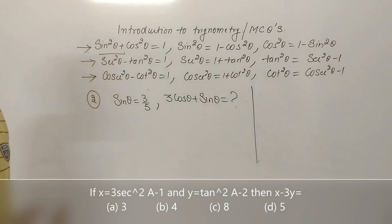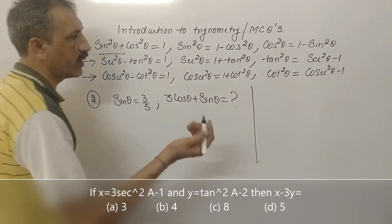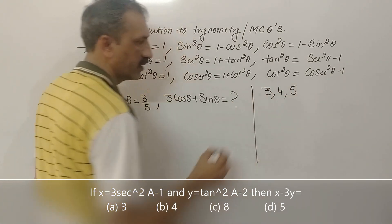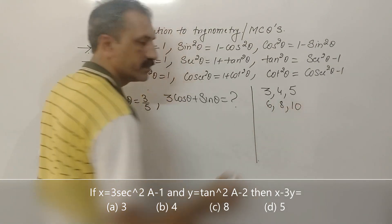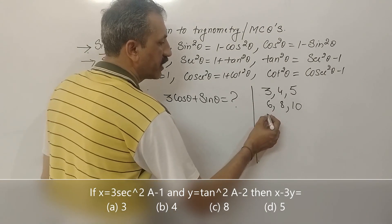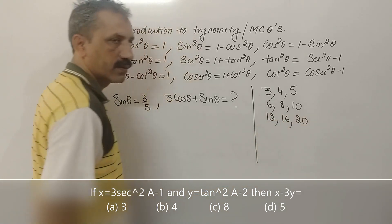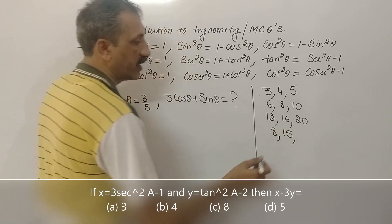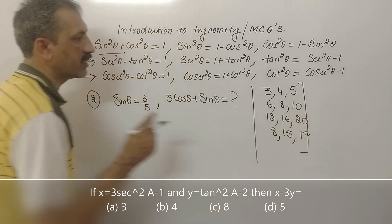There is a concept of Pythagorean triplet. The Pythagorean triplet says that if there are 3 numbers, the sum of squares of the two smaller numbers equals the square of the largest. Examples include 3, 4, 5 and 6, 8, 10, and also 12, 16, 20.